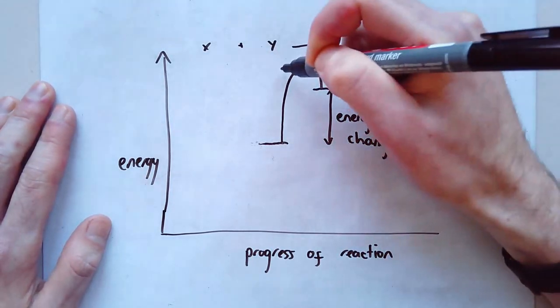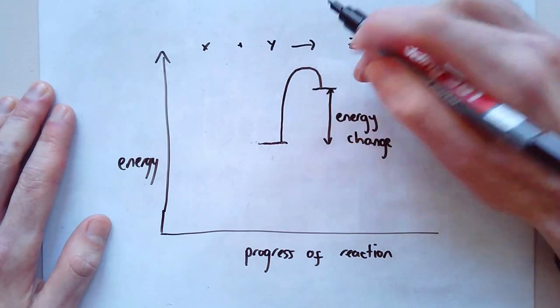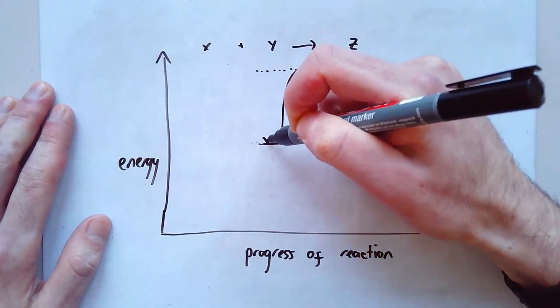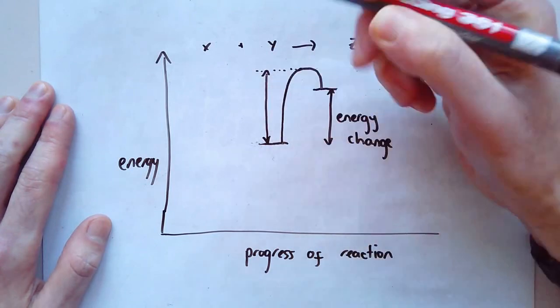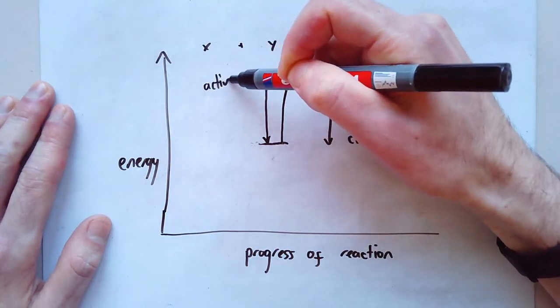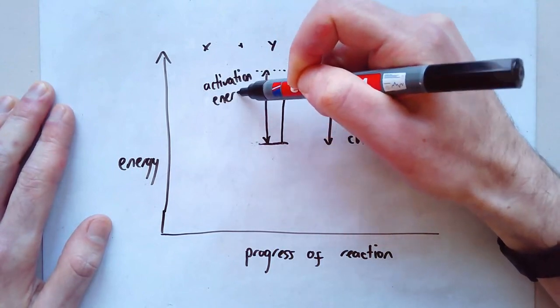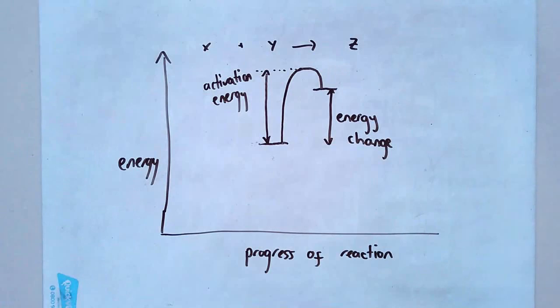And my, sorry, I should draw that on the other side actually. My activation energy is this. So actually for an endothermic reaction, the activation energy is really, really high. And in order to get the reaction going, I need to put in loads and loads of energy. And there you have it.